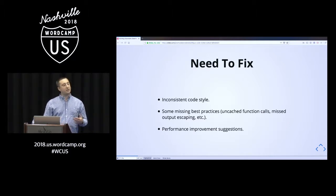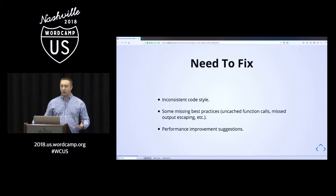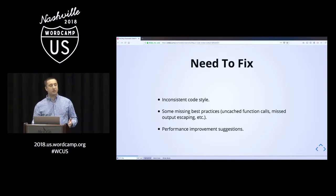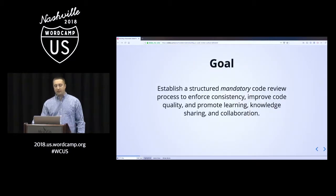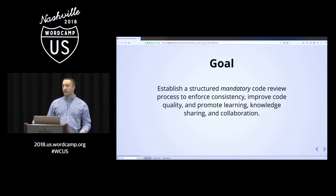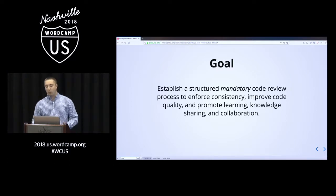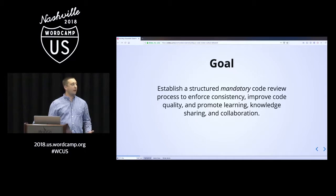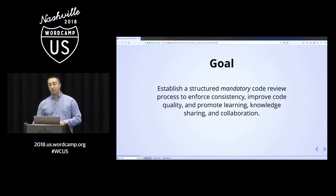We had to solve this and prevent long-term technical debt. So we sat down and established our goal: a structured mandatory code review process to enforce consistency, improve code quality, and promote learning, knowledge sharing, and collaboration. We had bi-weekly knowledge sharing meetings with IS&T and wanted to do more of that. Above all, we didn't want it to inhibit our team members from getting work done. We wanted it to feel natural, feel effective, be a positive experience, and help the team write better quality code.